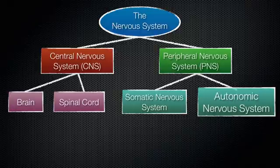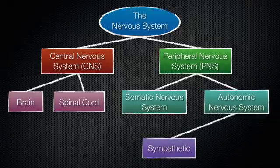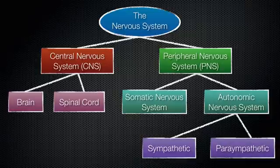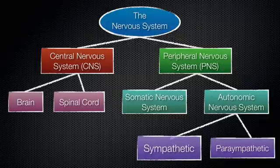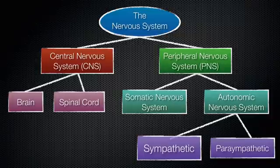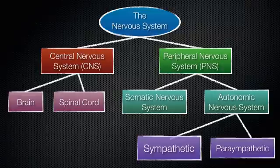Now we can take the autonomic nervous system and divide that into two parts. We have the sympathetic nervous system and the parasympathetic nervous system. The sympathetic nervous system is involved in the fight or flight response — it's what happens to your body when your body is under stress. Things like increasing your heart rate and respiration rate. So if you go for a nice long jog and your heart rate and respiration rate increase, that is under the control of the sympathetic nervous system.